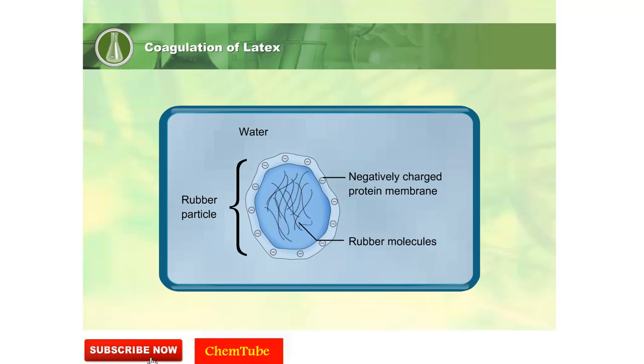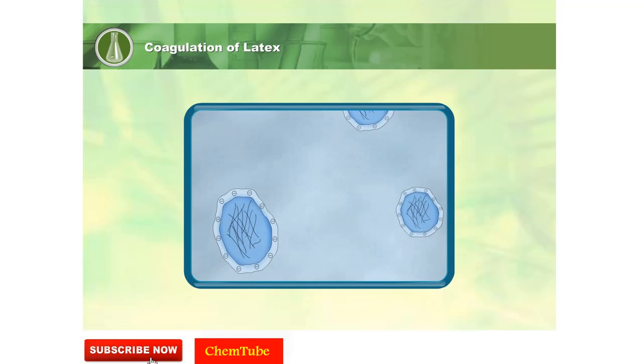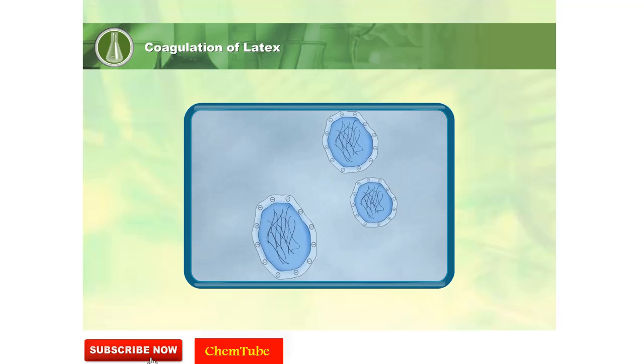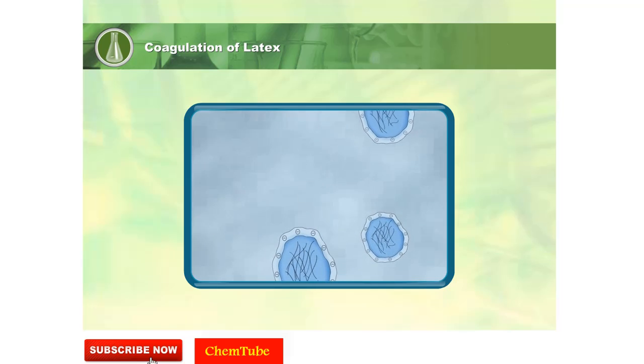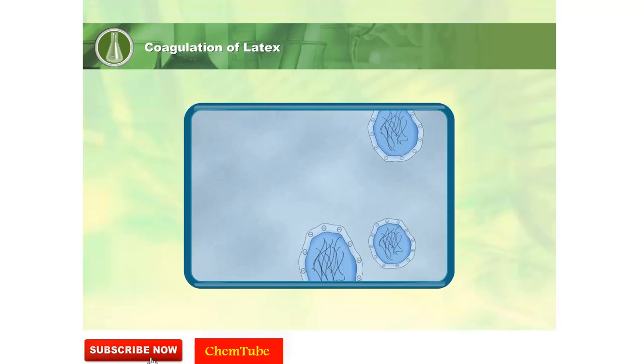The negative charge of the protein membrane prevents rubber particles from coming closer to each other — rubber particles repel each other. In latex, rubber particles move freely in water.